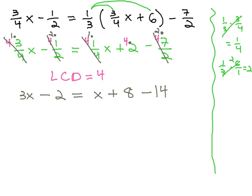To make this a bit nicer, we could combine like terms here on the same side of the equation. We now have 3x minus 2 equals x minus 6.